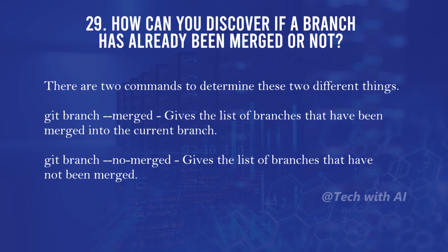How can you discover if a branch has already been merged or not? There are two commands: git branch --merged gives the list of branches that have been merged into the current branch, and git branch --no-merged gives the list of branches that have not been merged.